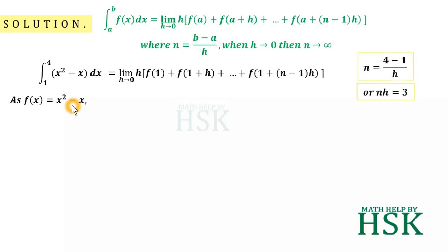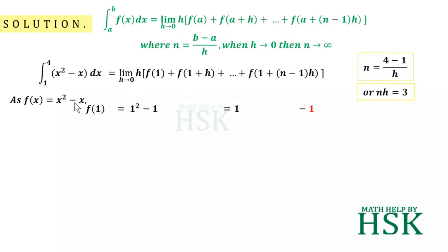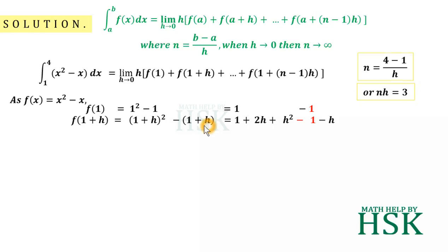Now, since f(x) = x squared minus x, I can write f(1) = 1 squared minus 1. And f(1+h) can be written as (1+h) whole squared minus (1+h). I am calculating the total of these terms: f(1) plus f(1+h) and so on up to f(1 + (n-1)h).